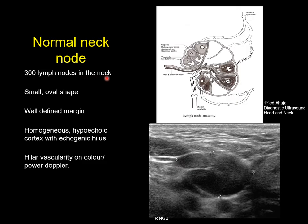There are 300 lymph nodes in the neck. A normal lymph node should be very similar to what you see on histology — it should be oval in shape. It should have an echogenic hilum, as you can see here, and there should be a blood vessel through the hilum. Normally you'll find it through here as well if you apply colour and power Doppler. The cortex itself should be homogeneous, well defined, small in size, and oval in shape.